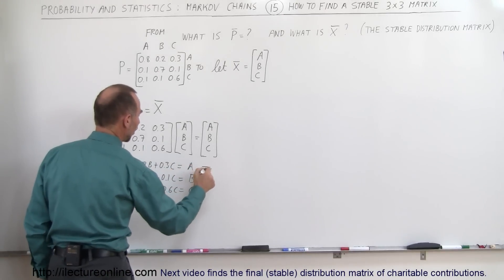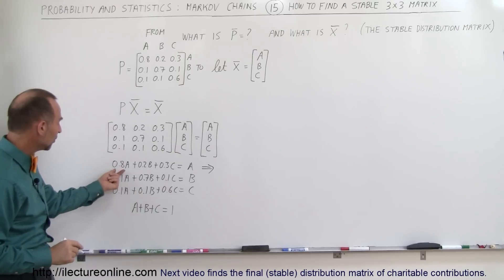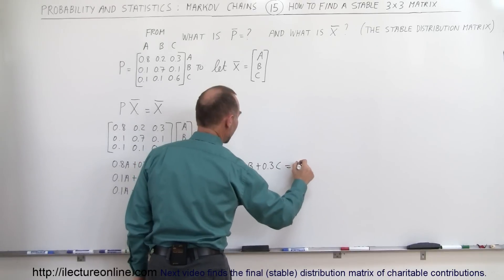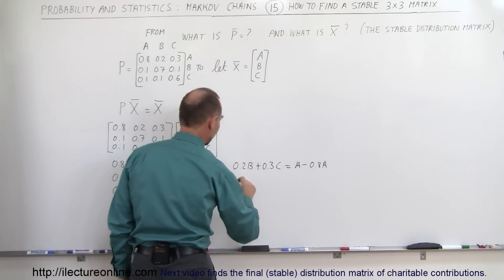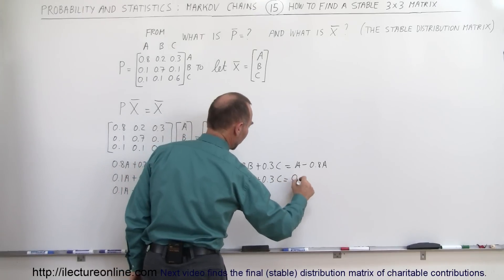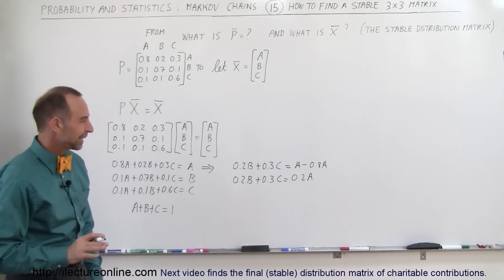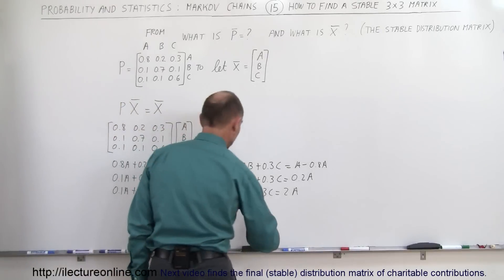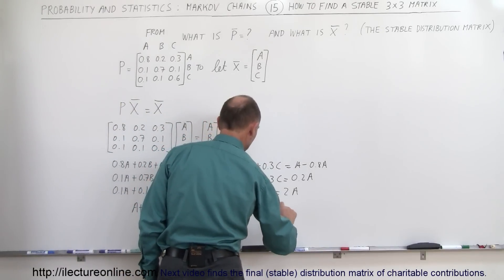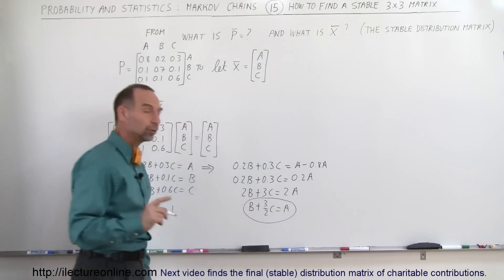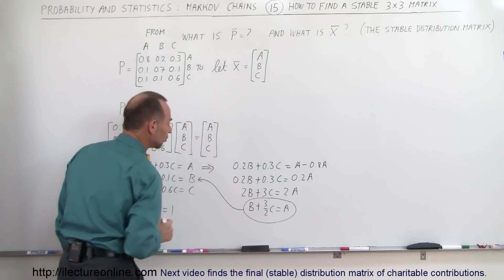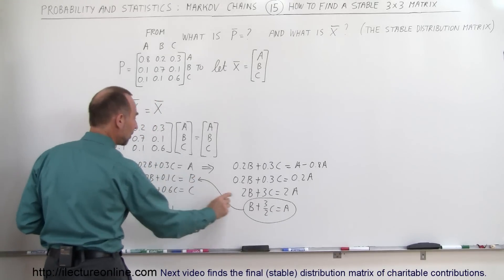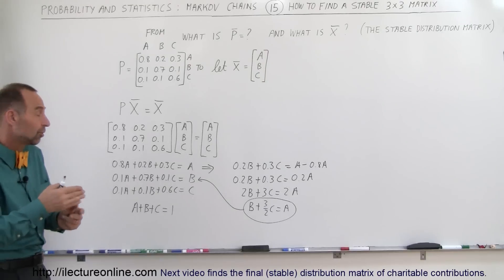We take the first equation to solve for A in terms of B and C. Moving 0.8A to the right side gives 0.2B + 0.3C = 0.2A. Multiplying both sides by 10: 2B + 3C = 2A. Dividing both sides by 2: B + (3/2)C = A. Now I have A in terms of B and C, and I'll plug this into one of the other equations.